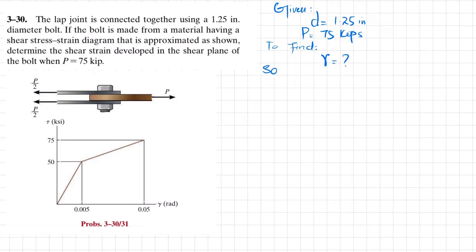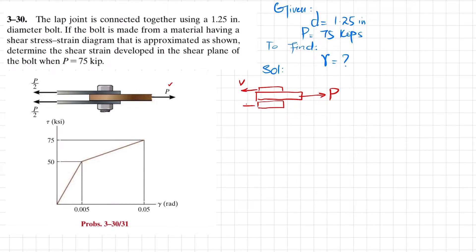Let's start with the solution. Due to this loading — drawing the free body diagram — there is one plate on one side and another plate on the other side with a load P applied at the end. Due to this load, there will be double shear in the bolt. There are two places where this bolt will tend to shear, and that shear force is represented as V.